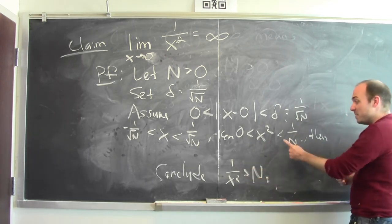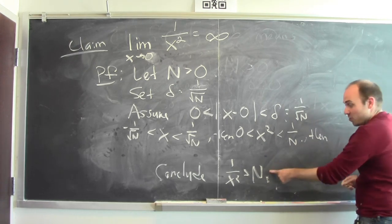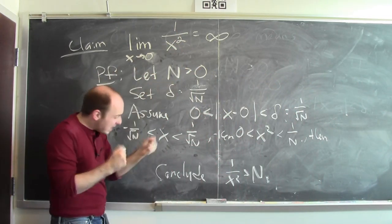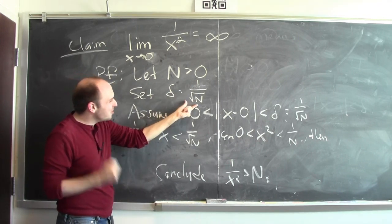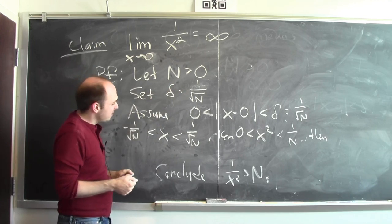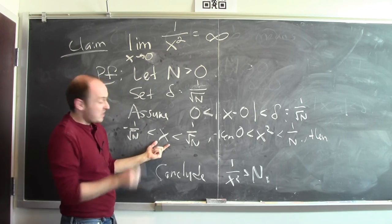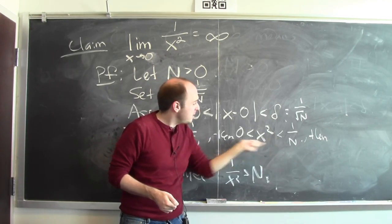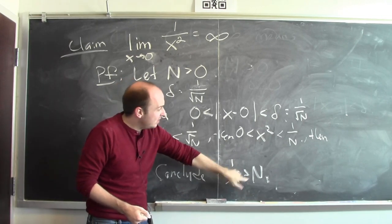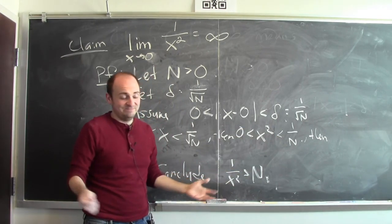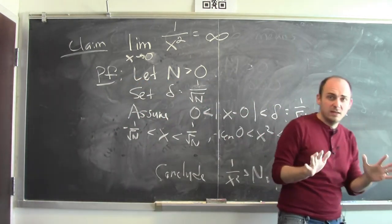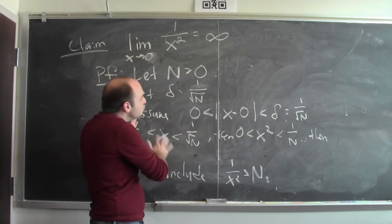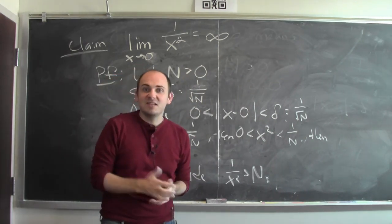If x squared is trapped between 0 and 1/N, then 1/x² is bigger than 1 over (1/N), which is N — and that's exactly what we want to conclude. So if you want 1/x² to be bigger than some number N, all I need is that x is within 1/√N of 0. That means x is between ±1/√N and not 0, so x² is between 0 and 1/N, and therefore 1/x² is bigger than N. I can make 1/x² as big as you want by making x sufficiently close to 0. There's another problem I'll give you to try this in a slightly different case. Good luck.